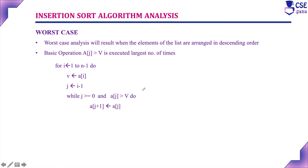Next, the worst case efficiency: considering the case where the given elements in the list are arranged in descending order. In descending order, for almost every comparison we need to exchange the element. So the basic operation will execute the largest, maximum number of times. Here this is the algorithm — this is the outer for loop — and when the outer for loop condition is true, the inner for loop will execute the maximum number of times, giving the worst case efficiency.